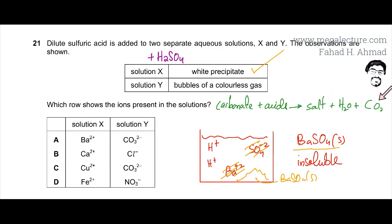So what happens when a carbonate reacts with acid? It produces a salt, a water molecule, and a carbon dioxide molecule, which is a gas. So you're going to see bubbles of a colorless gas, so the second option is also going to be correct. So option A looks perfectly right because both observations would be obtained for option A.